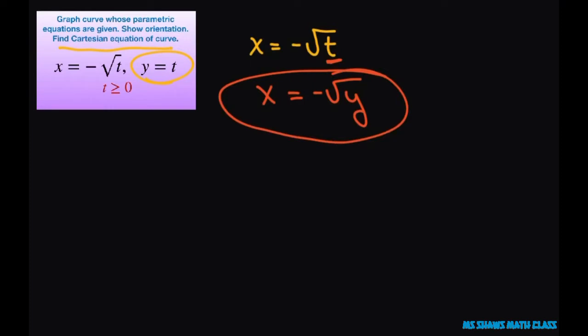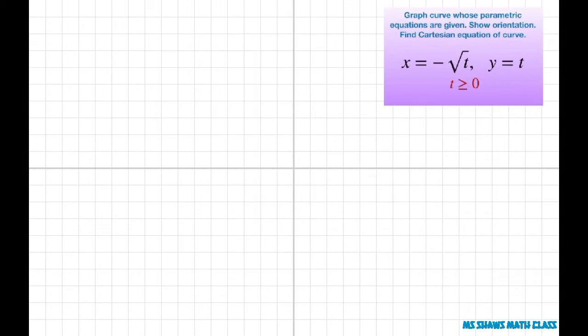Now let's go ahead and graph this based off this information. I know it is x equals negative square root of y. So I know we're going to be in this quadrant here, based on what we have. But let's look and see our t. So we have t here.